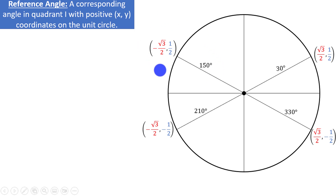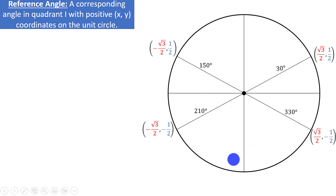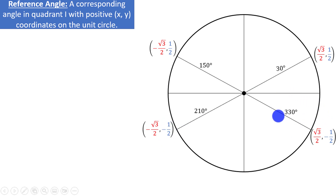For example, at 150 degrees, the x-coordinate is negative because we are to the left of the y-axis. The same is true at 210 degrees — we are to the left of the y-axis, which means our x-coordinate is negative. We are also below the x-axis, which means that the y-coordinate will be negative. As for 330 degrees, we are to the right of the y-axis, meaning the x-coordinate is positive, but we are below the x-axis, which means the y-coordinate will be negative.